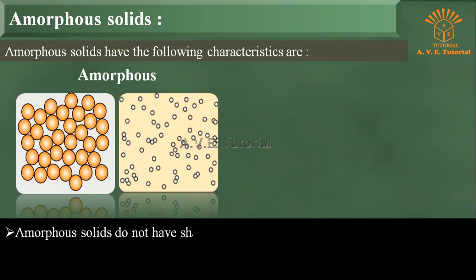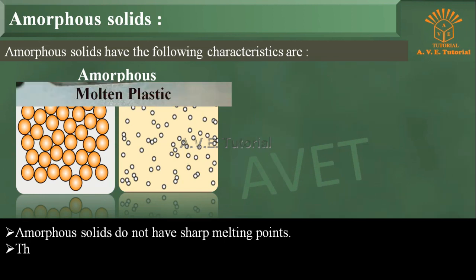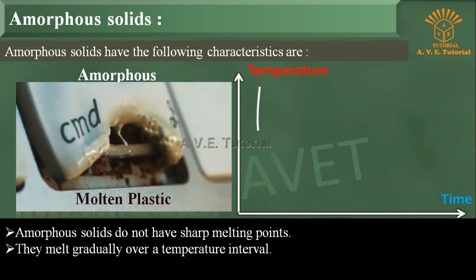Two: Amorphous solids do not have sharp melting points. They melt gradually over a temperature interval.